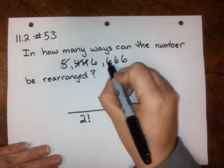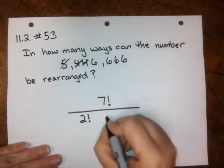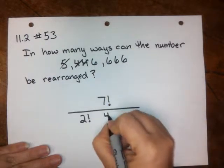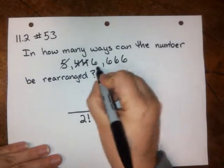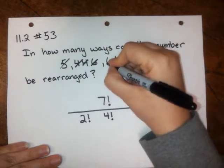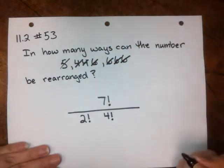And now we have one, two, three, four sixes. So we need to put a four factorial in the denominator to account for the fact that we have four copies of the same number here. Cross them off, we've taken care of all of the numbers.